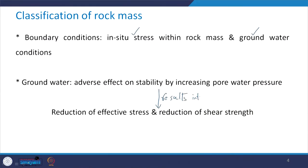Groundwater has an adverse effect on stability. When groundwater is present, it increases the pore water pressure, which results in the reduction of effective stress and therefore reduction of shear strength. Strength characteristics are represented with respect to effective stress — that is total stress minus pore water pressure, from soil mechanics. The same effective stress principle is applicable here: as pore water pressure increases, effective stress reduces and shear strength decreases.